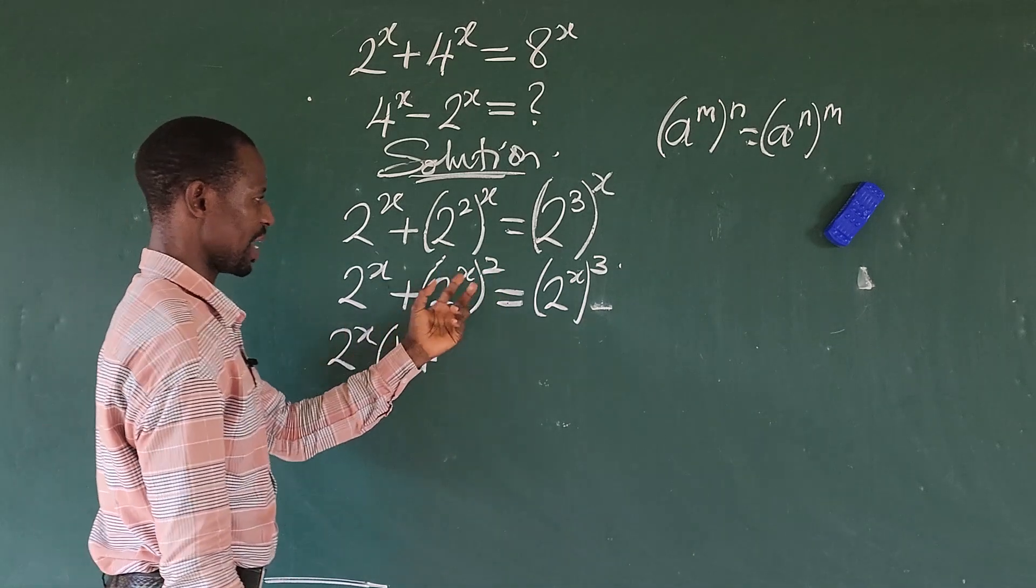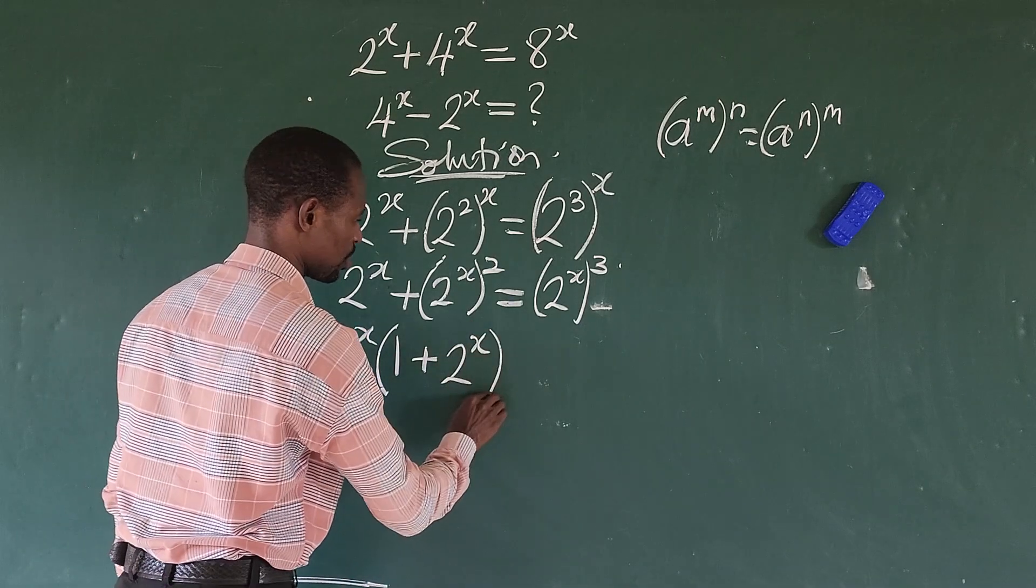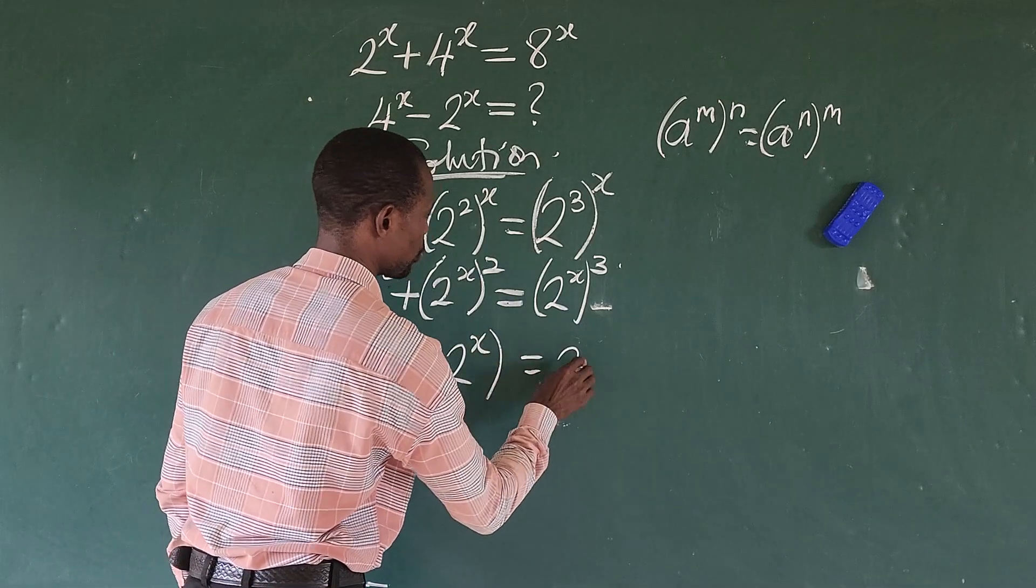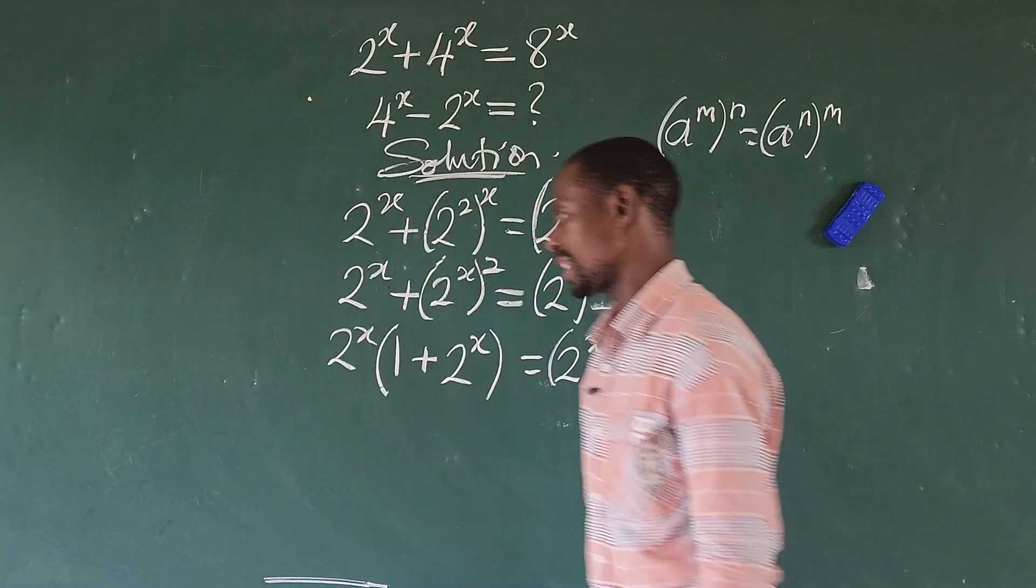Then we are left with 1 of this very 1 because we are having 2 of each here. So if we use this to divide this, it's going to give us 2 to the power of x close bracket, which equals to 2 to the power of x to the power of 3.